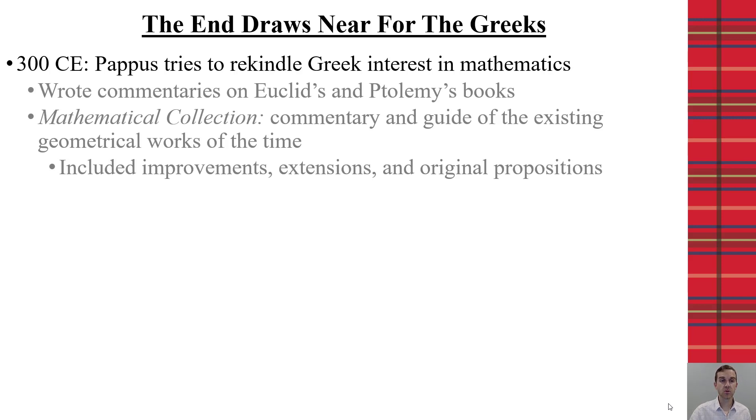Pappus was able to write commentaries on Euclid and Ptolemy's books and put together what was called the mathematical collection, which helped to show what was going on within the existing geometrical works of that time. That's where we get a lot of our concepts and understanding of what the Greeks could do. Not only did it include improvements and extensions, it also had original propositions, which was important. So, he was trying to push them back to focusing on improving their math and science.